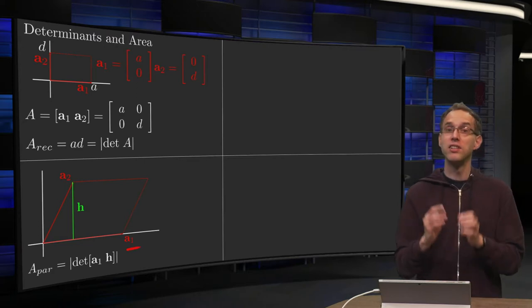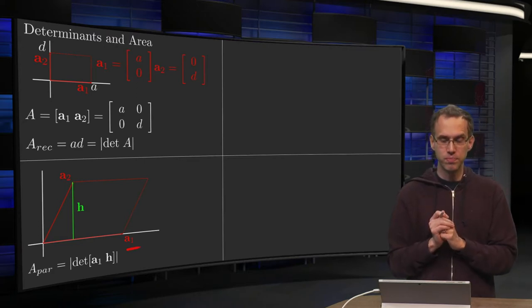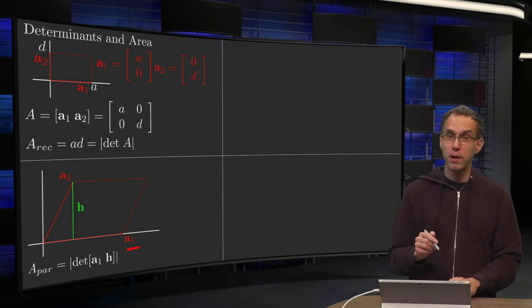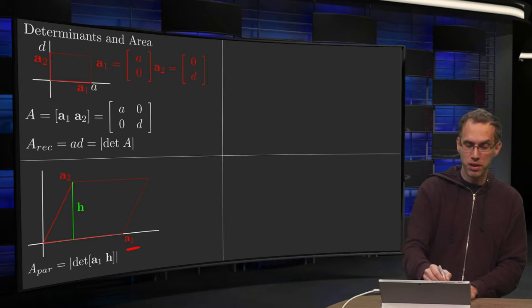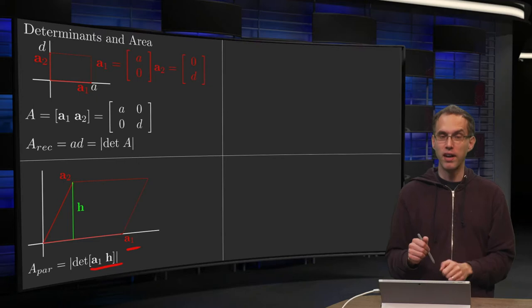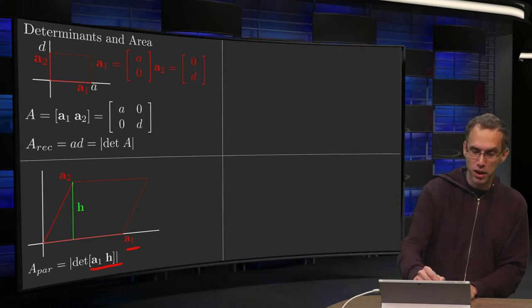Then we can compute the area of our parallelogram. It's equal to |a₁| times h, where h is the height of your parallelogram. You can see this, for example, if you cut this part away and glue it here, and you have a rectangle again.